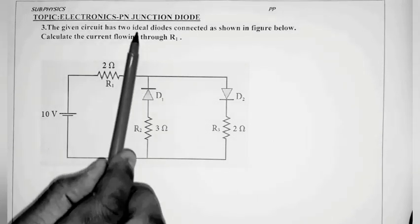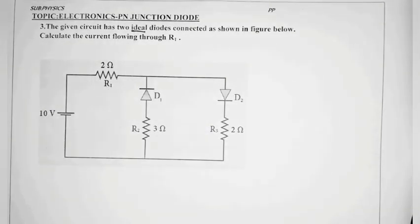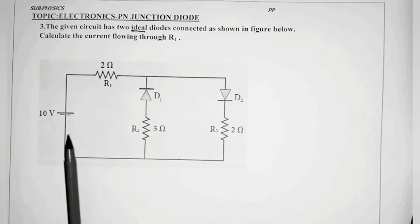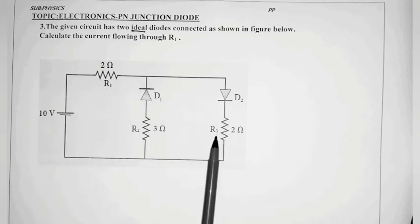The given circuit has two ideal diodes. So ideal diodes mean zero voltage drop and zero ohm resistance when conducting. Let's look at the circuit. There is one battery, resistor R1, R2, R3. There are three resistors and two diodes.